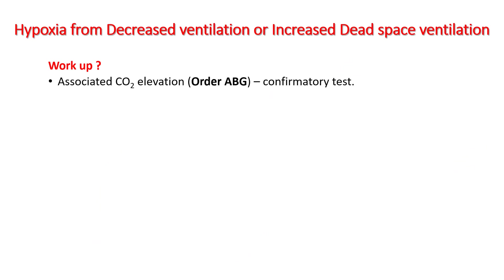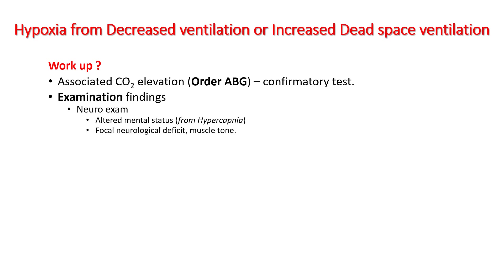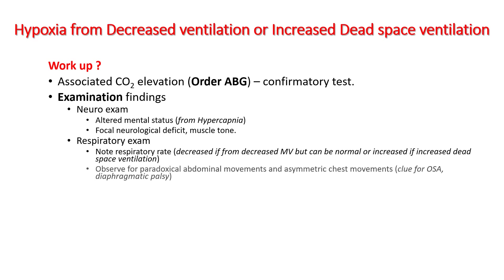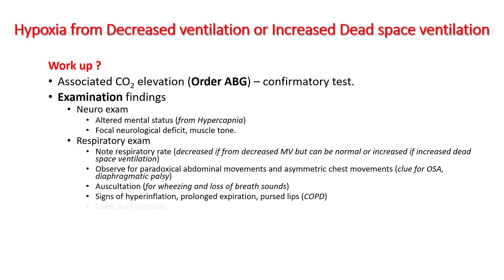When you think about hypoventilation, your carbon dioxide levels have to be elevated — you have to get an ABG to prove that. Most hypercapnia happens from depression in the respiratory center and its pathway to the diaphragm, so do a good neurological exam: look for altered mental status, neurological deficits, and muscle tone. Also do a good respiratory exam — look at the respiratory rate and paradoxical movement of your abdominal muscles. Auscultate for signs of COPD, look for signs of hyperinflation and chest wall anomalies. Pay close attention to respiratory rate: if it is from decreased minute ventilation, the rate would be low.